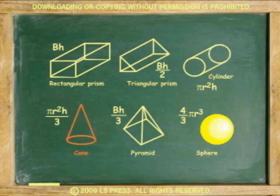The cone, which is the volume of the cylinder divided by 3. The pyramid, which is the volume of the rectangular prism divided by 3. And the sphere, which is 4 over 3 times pi times the radius cubed.